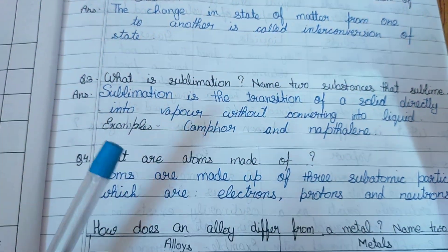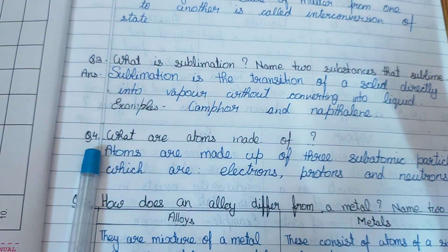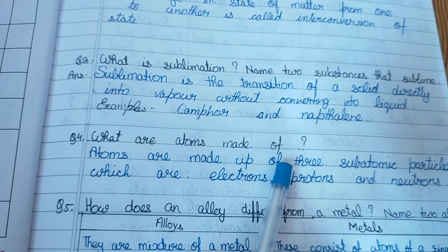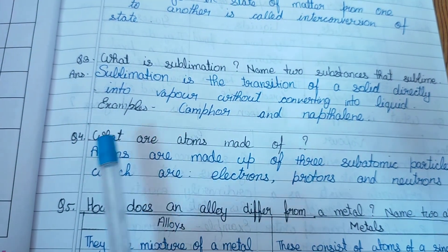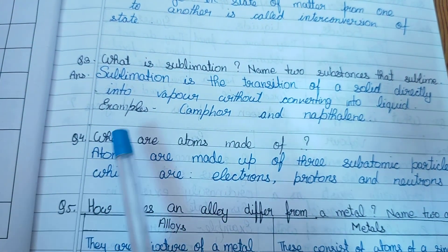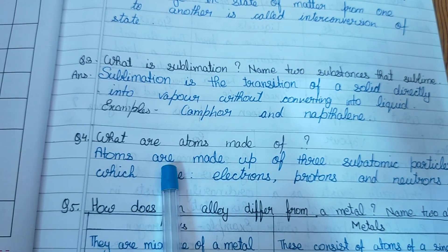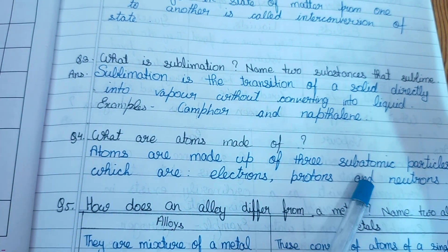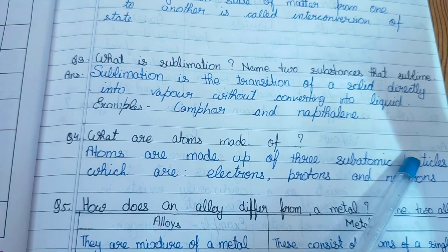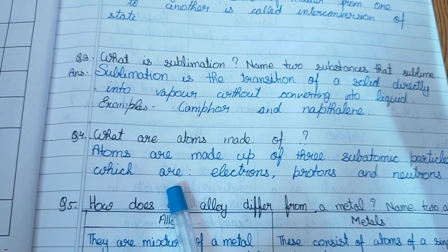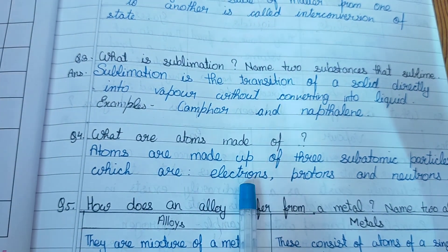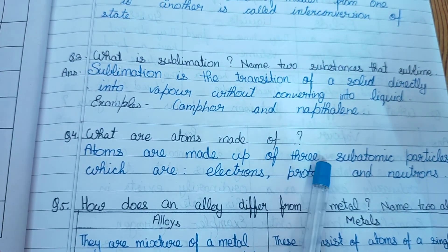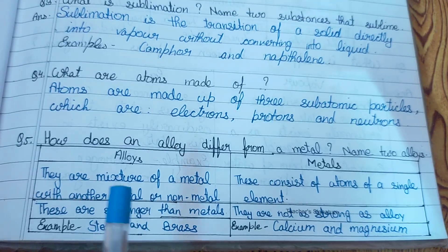Question number 4: What are atoms made up of? Answer: Atoms are made up of three subatomic particles, which are electrons, protons, and neutrons.